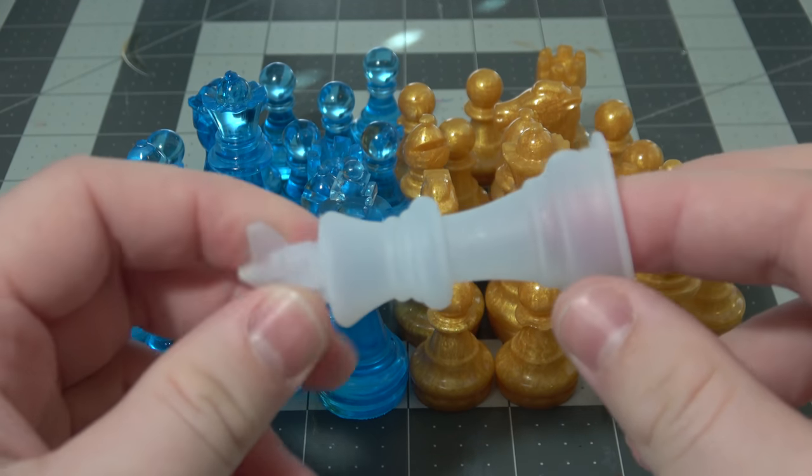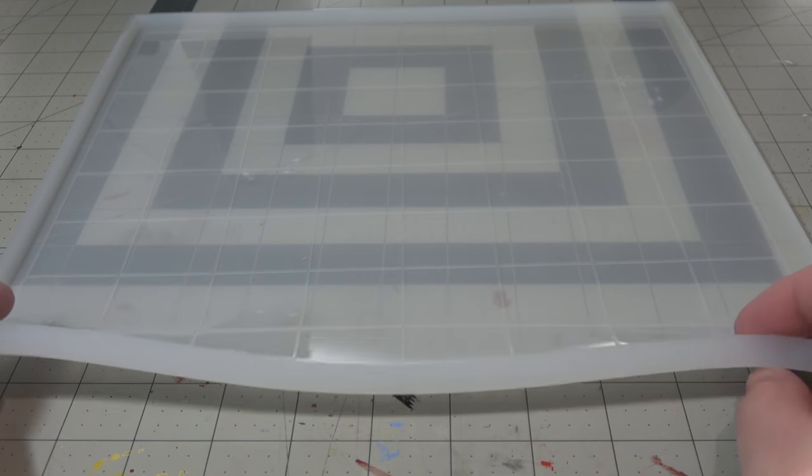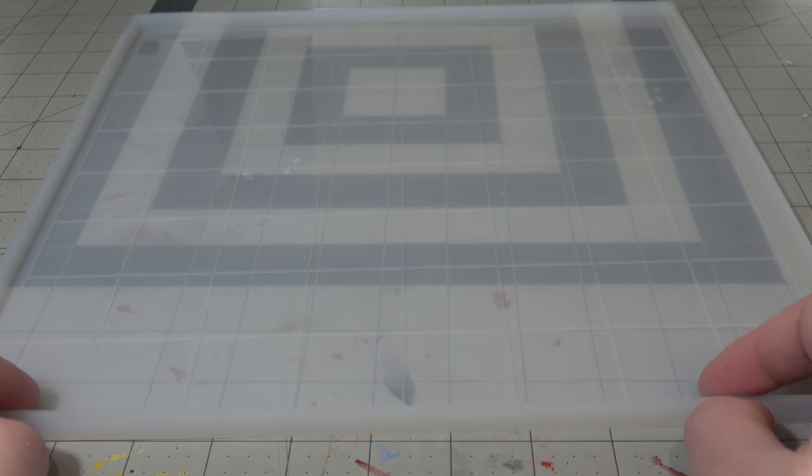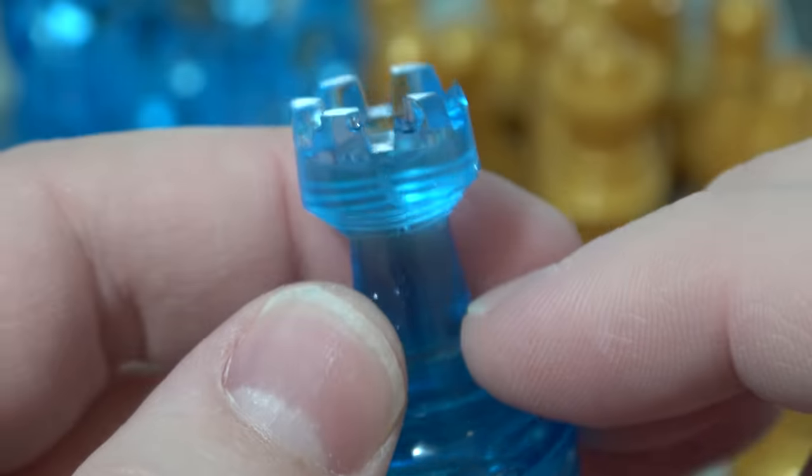I don't think that the chess piece molds are going to last near as long as the board. They're nice. They'll probably make about five sets in before I would start to see wear and tear, where the board, I'm sure you can make 30 or 40 boards before you start to see any wear and tear on it.